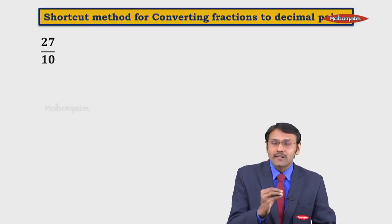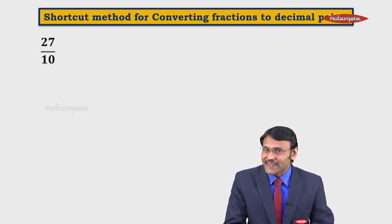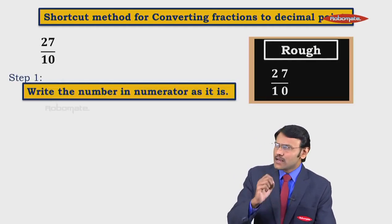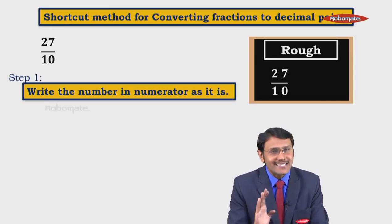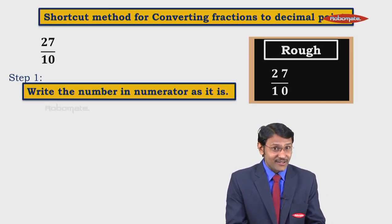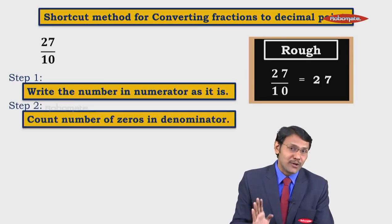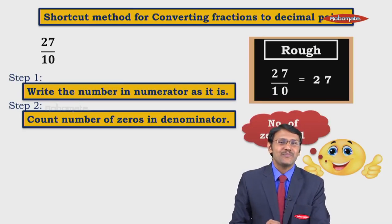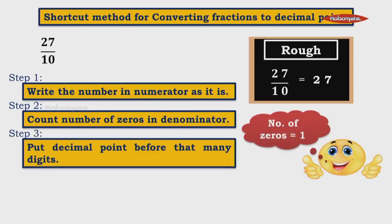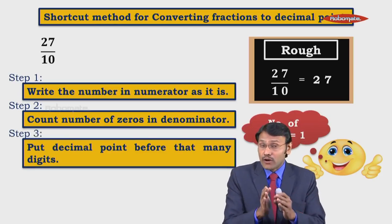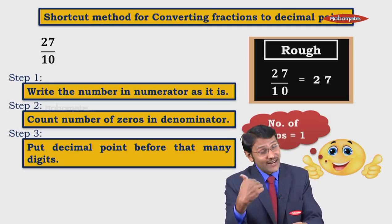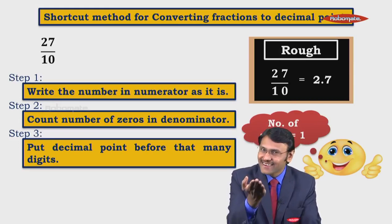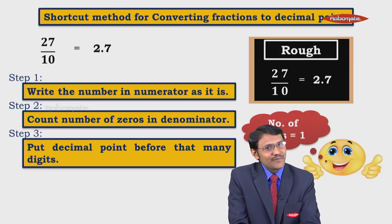Now let us understand the shortcut method for converting fractions to decimal point. The question is 27 upon 10. There are 3 steps. Step 1: write the number in the numerator as it is — we have 27, so we write 27. Step 2: count the number of zeros in the denominator — in 10 there is 1 zero. Step 3: put the decimal point before that many digits, counting from right to left — leaving one digit from the right, we place the decimal point. So the answer is 2.7.